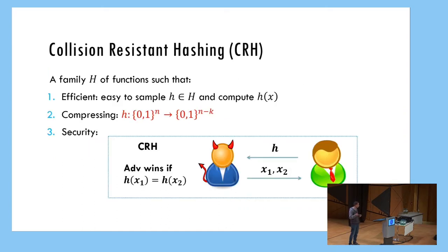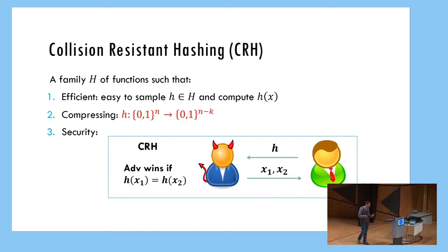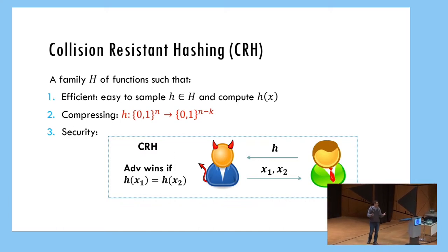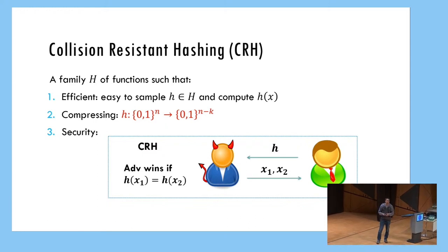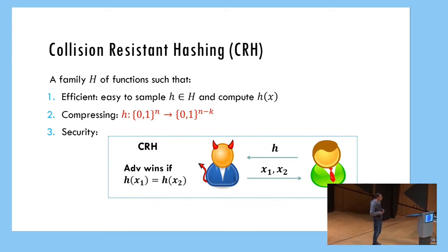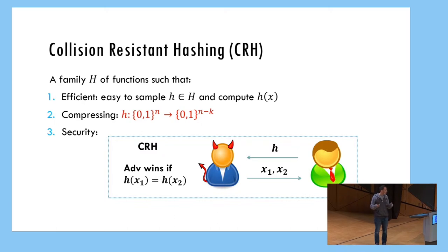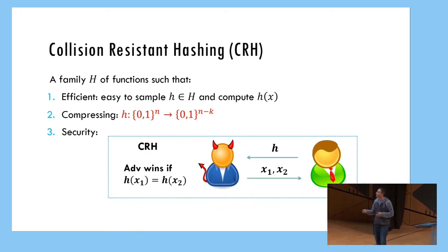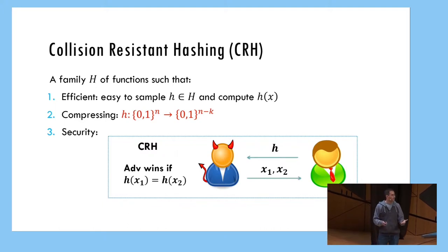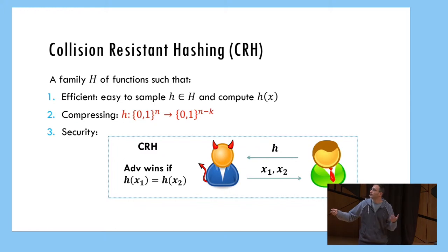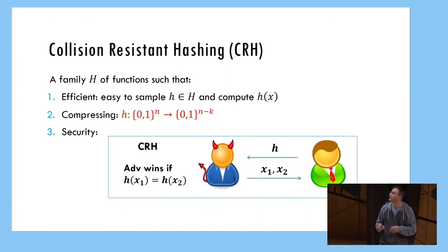So let's start with the most basic notion of security. I assume most of you have seen something like this. This is a collision of a hash function, a CRH. So this is going to be a family of hash functions H. We have a family of functions; each function in the family is efficiently samplable, the functions are efficiently computable, and they have to be compressing. If your hash function is not compressing, maybe that's not too big a challenge. The security is formalized with a game: a challenger sends a random H from the family, and the adversary needs to return X1 and X2 such that H of X1 equals H of X2, and of course they are different. This is the standard notion of a collision-resistant hash.